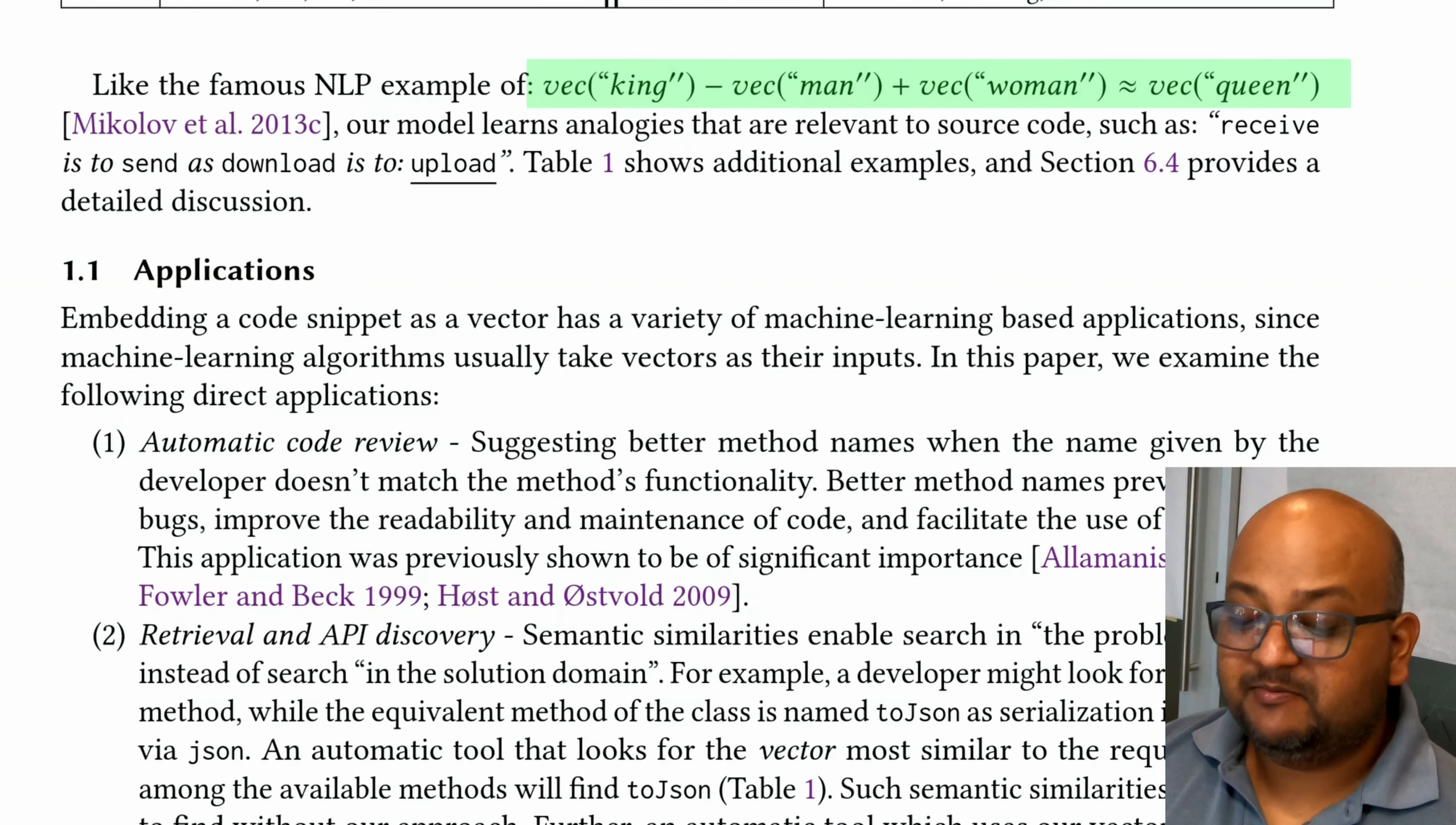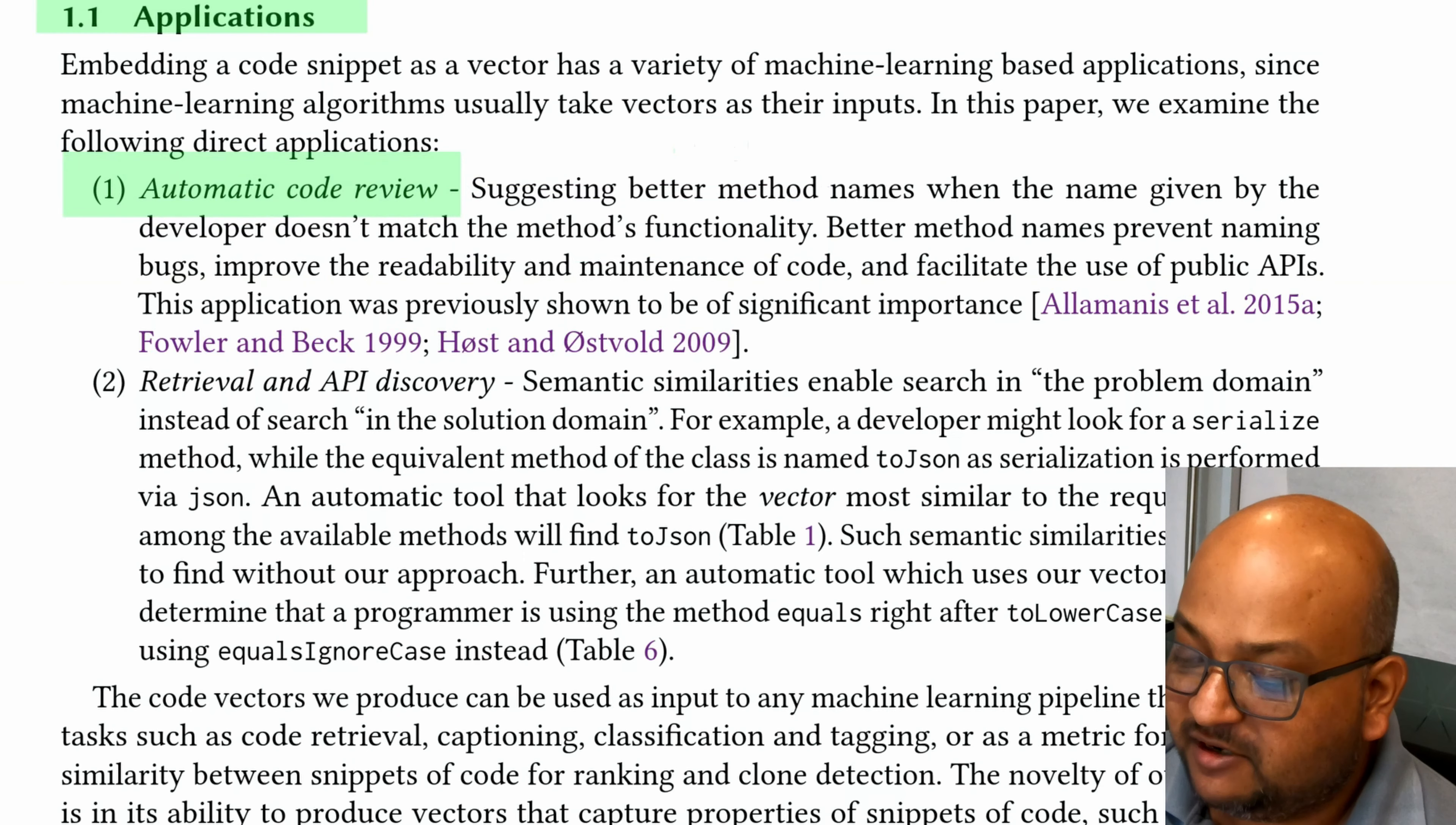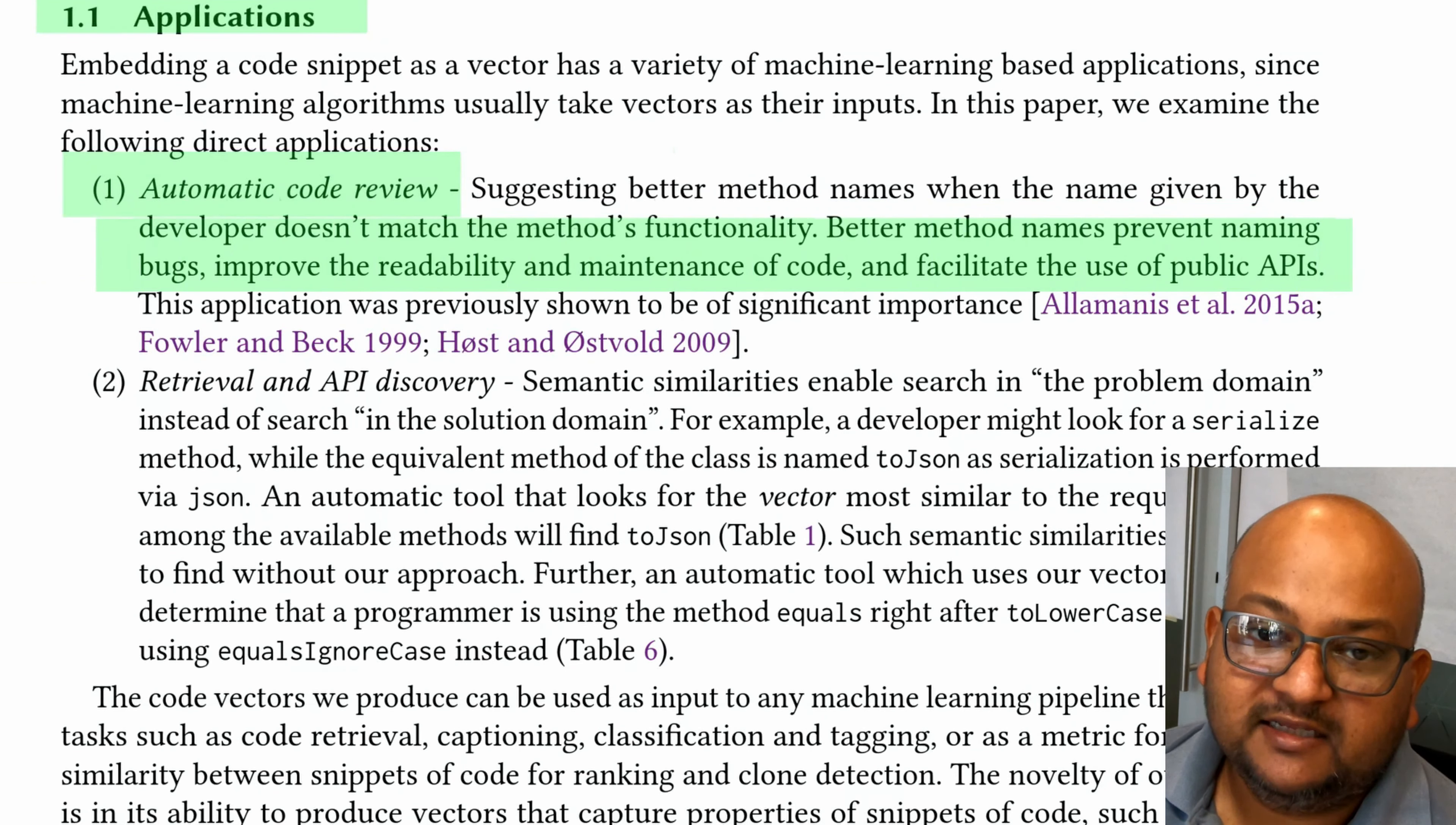Alright, so coming back to the paper. A technique like this has many applications. One of the most obvious ones is in code review. One of the big things that reviewers look for when reviewing code is good naming of methods. And a technique like this can go a long way towards automatically suggesting good method names.